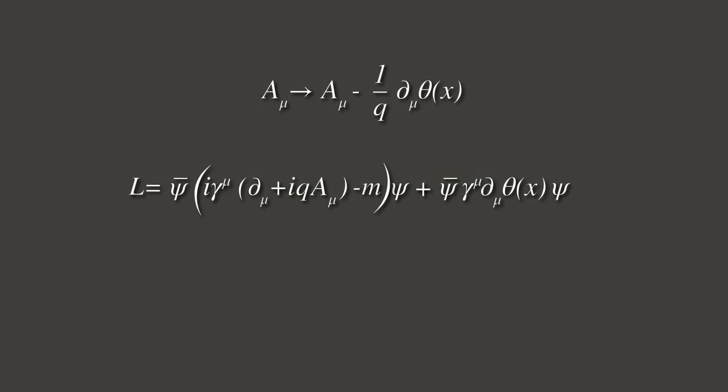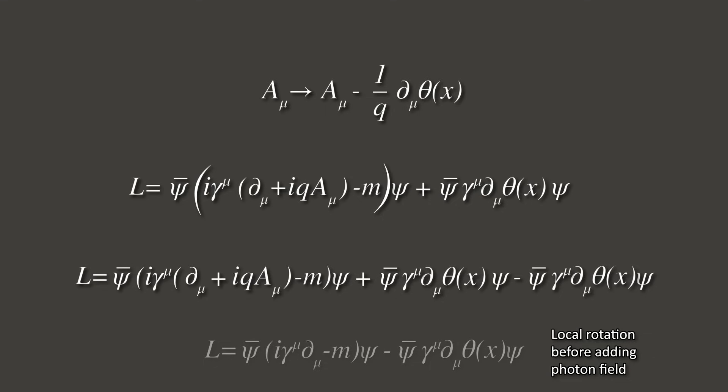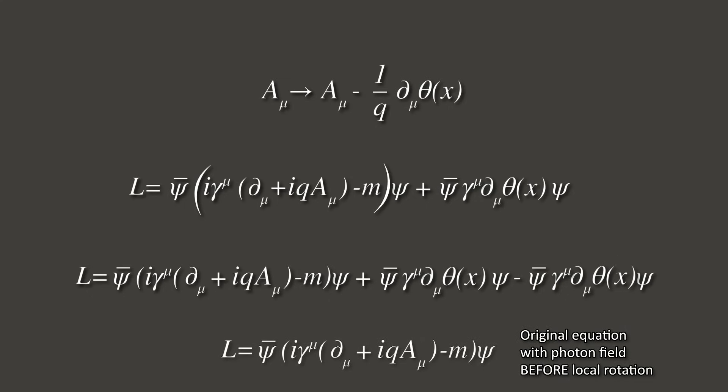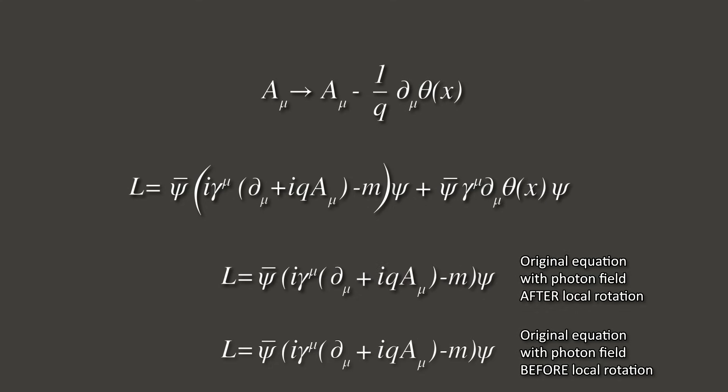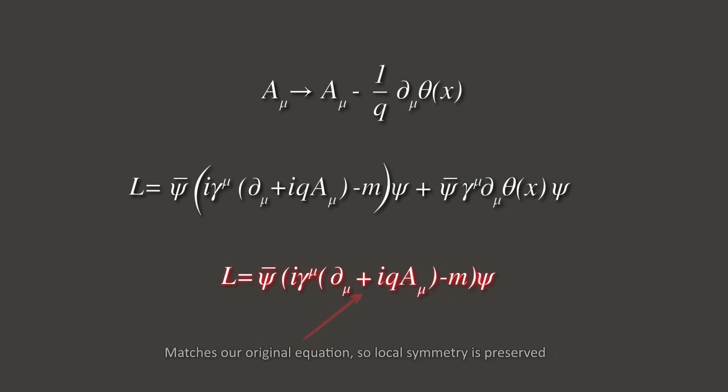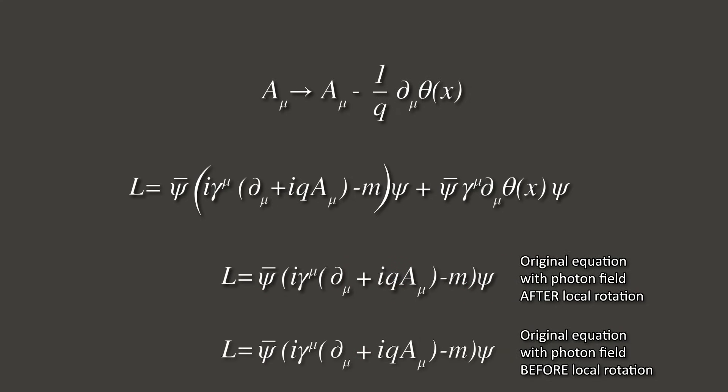After doing the math, we get the extra term as before, but also another new term from the photon transformation. This is what the equation looked like without the photon field, and this is what the equation now looks like with the photon field. And this new third term, it turns out, cancels the second term we didn't want to have. And so we are now back to the original equation describing the electron field interacting with the photon field. We just demonstrated that we have local symmetry of the electron field if we introduce a new force field mediated by photons. This means that by adding the photon field with the appropriate transformation, also called a gauge transformation, we can restore symmetry, called U1 symmetry.